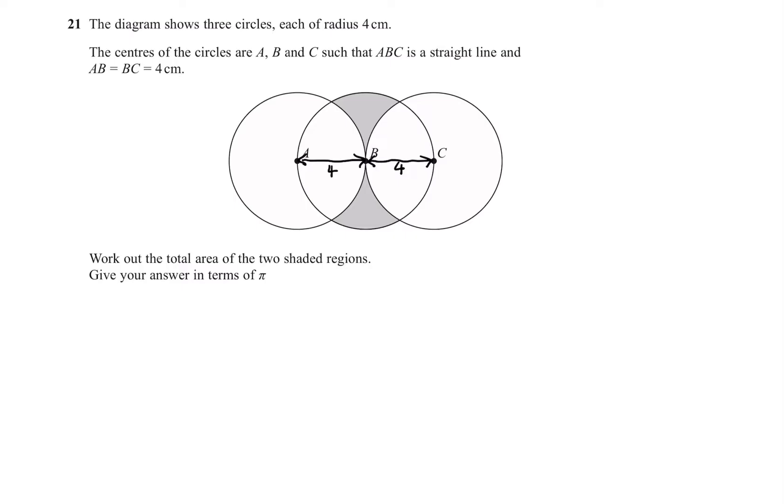So what we can do first is notice that if we join this up, we're going to have an equilateral triangle as each of these three lines are just radius of each circle. So we're going to have an equilateral triangle. Let's draw that out here. Now, that means each angle is going to be 60 degrees.